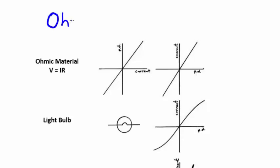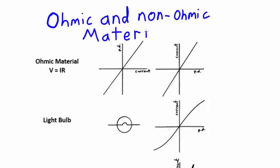In this video, we're going to look at two different types of components. They're called ohmic and non-ohmic materials. Ohmic materials are materials that always follow Ohm's law, that V equals IR.